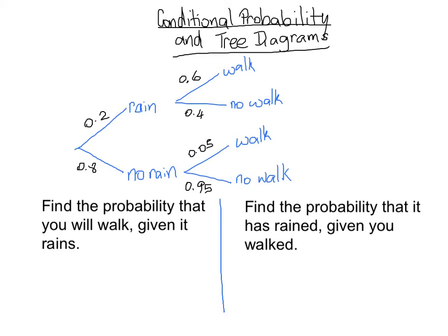This can be either really easy or a lot more challenging. The really easy version is on the left side. Given that it rains, what's the probability that you will walk? If you look on the tree going up this branch, once we know it rains it becomes a certainty, so the probability that you walk is just 0.6 — no calculation necessary if you have the tree right in front of you.